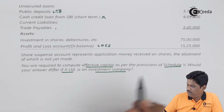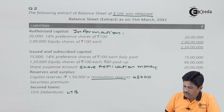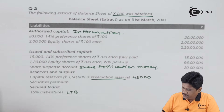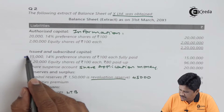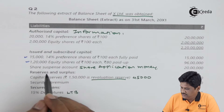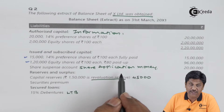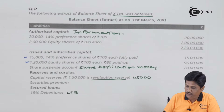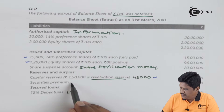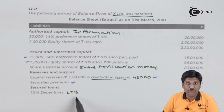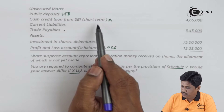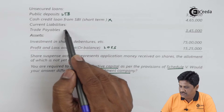Effective capital as per provisions of Schedule 5: we need to decide which items can be counted as capital. Authorized capital will not be taken. Issued and subscribed capital will be considered. Share suspense account cannot be considered as per Schedule 5 because application money on shares not yet allotted is excluded. 15% debentures will be counted as long-term borrowing. Public deposits will also be counted as long-term borrowing. Short-term borrowings will not be counted.